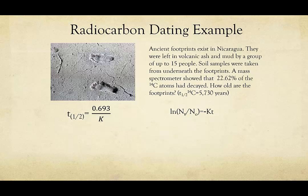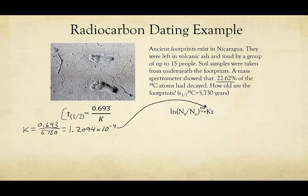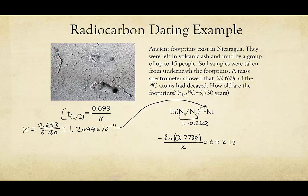Now let's do one more example using radiocarbon dating. Ancient footprints exist in Nicaragua, left in volcanic ash and mud by a group of up to about 15 people. Soil samples taken from underneath the footprints were analyzed with a mass spectrometer, showing that 22.62% of the carbon-14 atoms had decayed. Notice how that's worded — they're giving us the amount that has decayed, not the amount still present. To find how old the footprints are, we start with the half-life equation to solve for k, then fill k into our integrated rate law. We fill in 1 minus 0.2262, not 0.2262 itself. The footprints are likely around 2,000 years old.